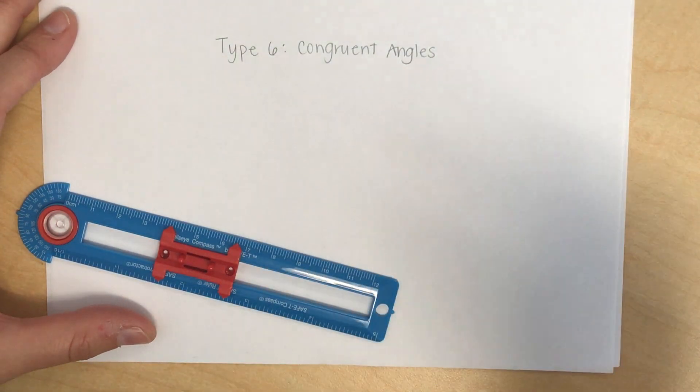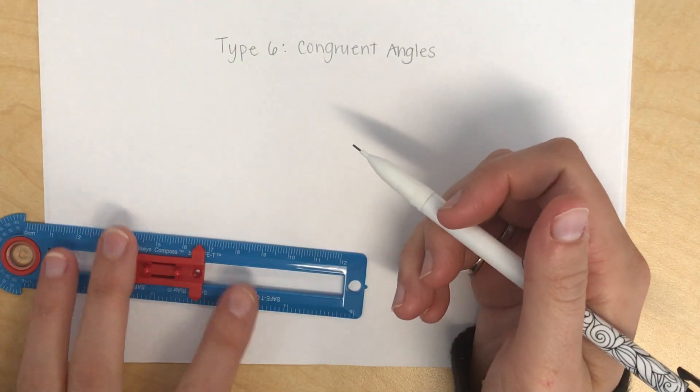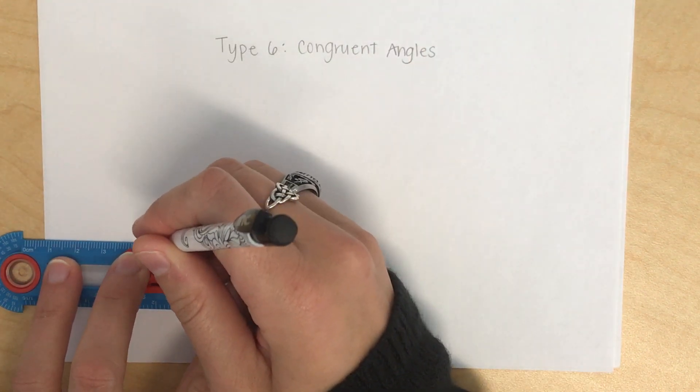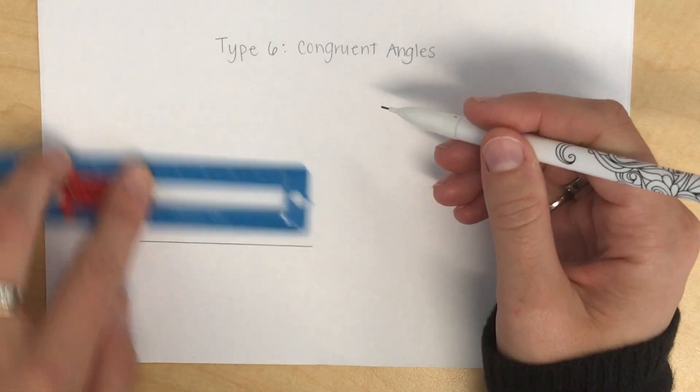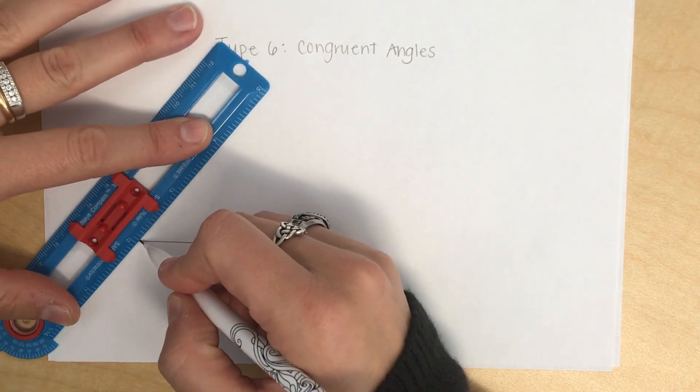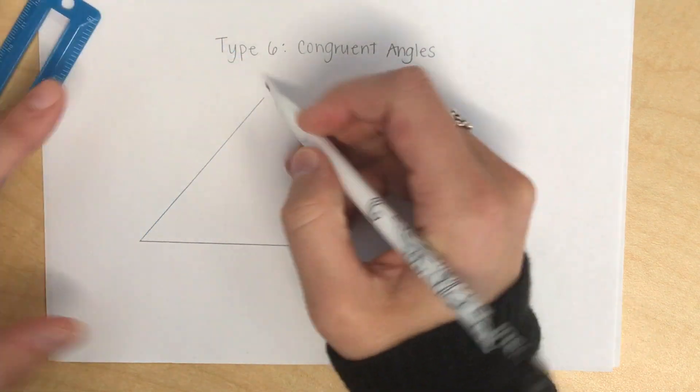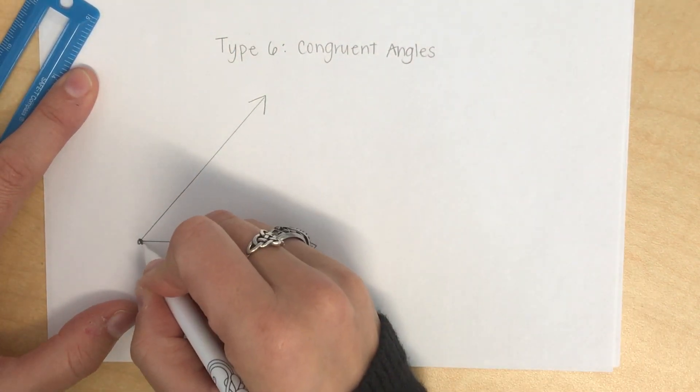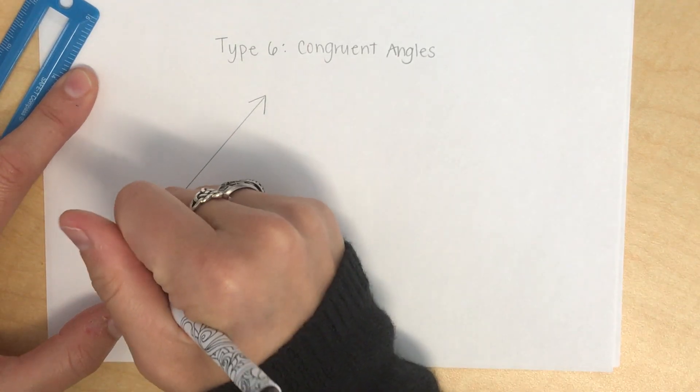The first thing I'm going to do is I need to draw an angle, and I'm going to draw myself a nice acute angle. I'm going to use the straight edge of my compass. I'm not going to just freehand it. I'm going to actually draw it as accurate as possible here. And I'm going to label this point where my two rays intersect, my vertex, as point A.